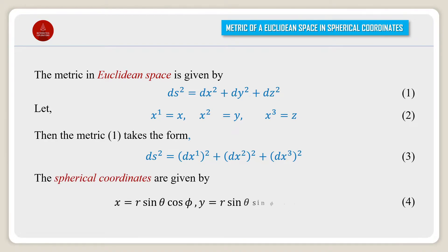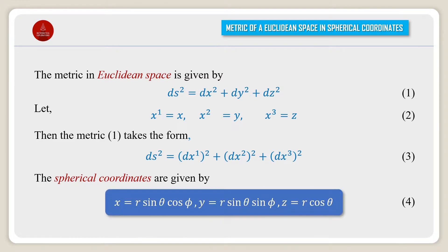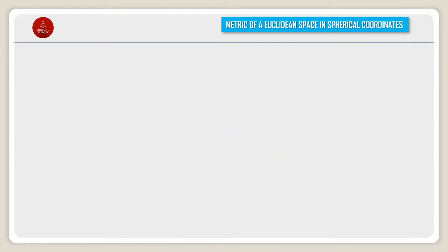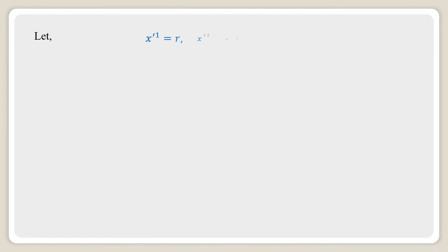The spherical coordinates are given by x = r sinθ cosφ, y = r sinθ sinφ, and z = r cosθ. Let x'¹ = r, x'² = θ, and x'³ = φ.